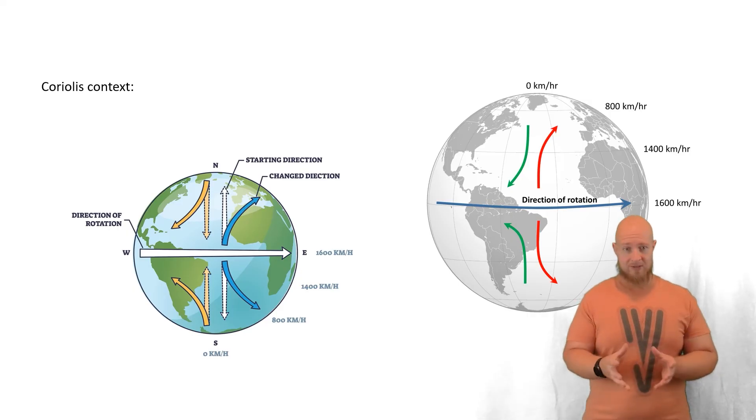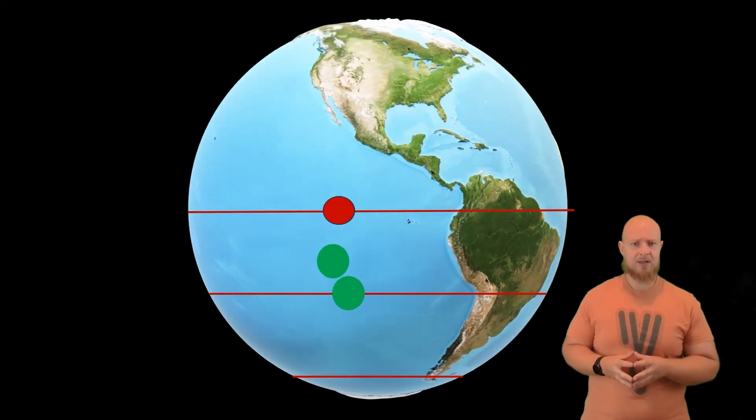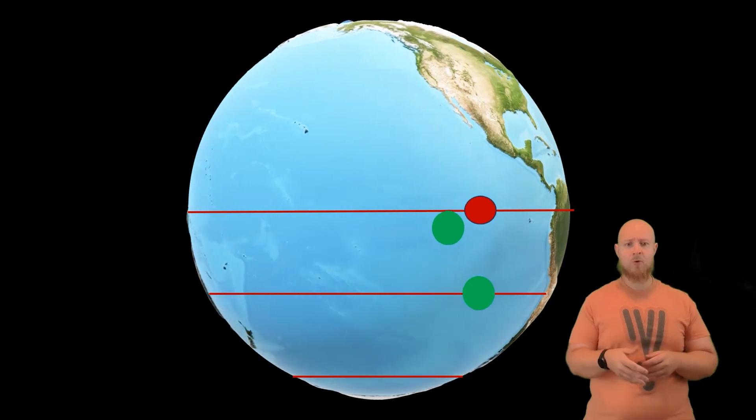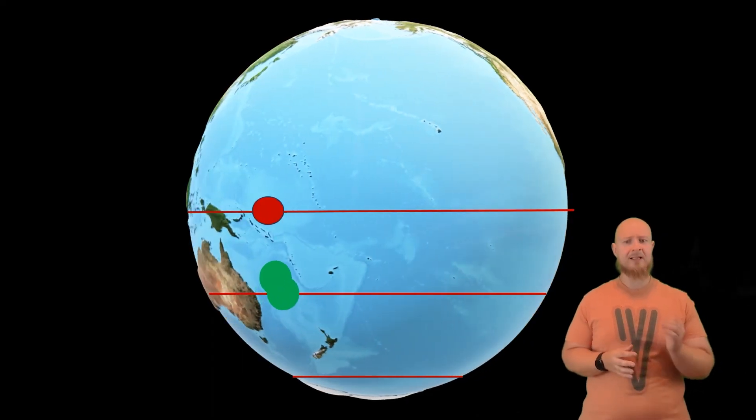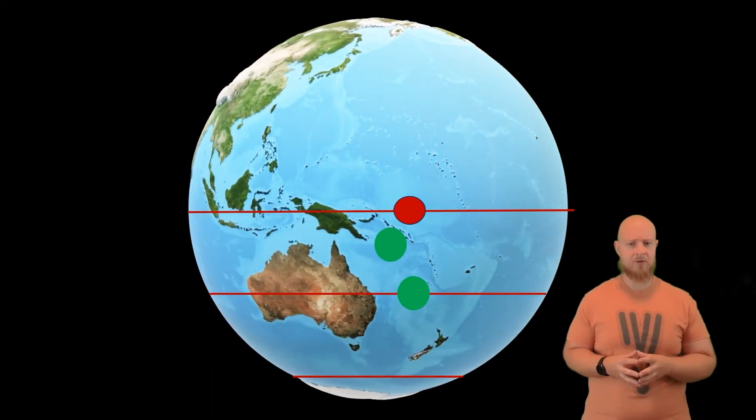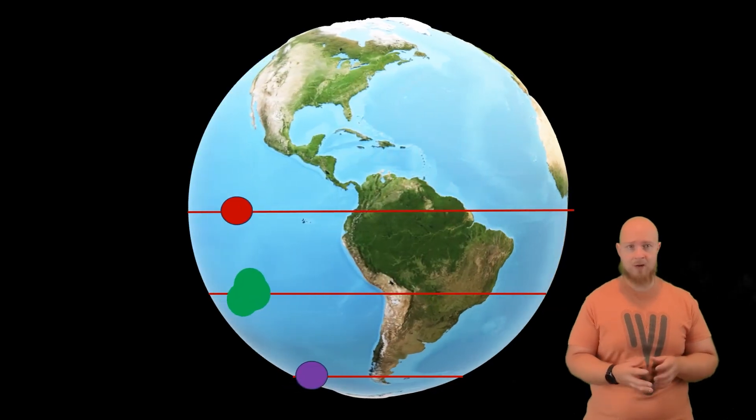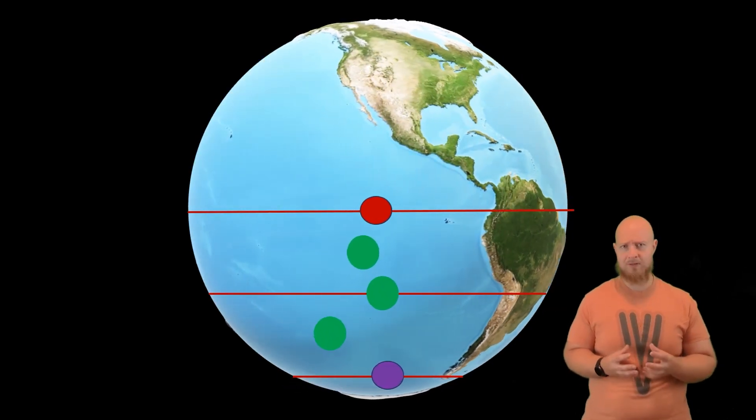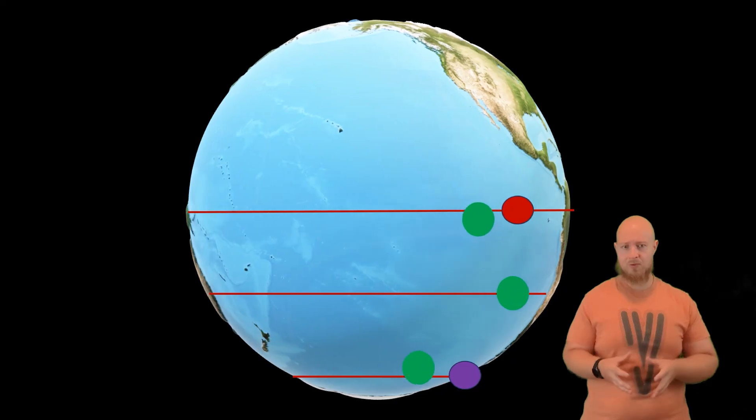In the southern hemisphere, objects appear to be deflected left relative to their direction of movement. Now again, look at the dots. The air mass moving north towards the equator was deflected left relative to its direction of travel. An air mass moving south towards the poles is also deflected left relative to its direction of travel.